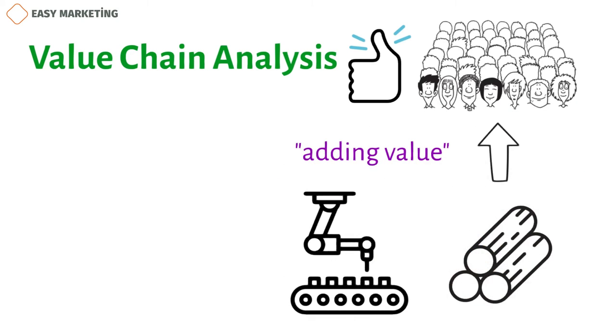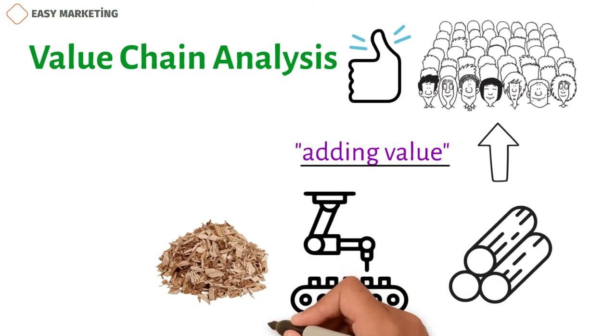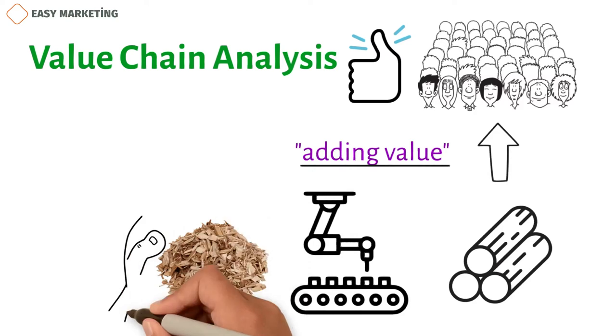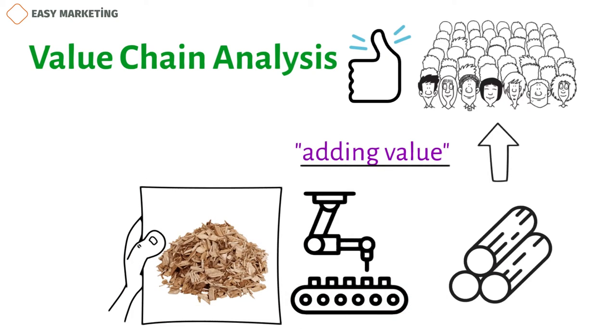This is easy to see in manufacturing, where a company adds value by taking a raw material, like wood pulp, that the end user doesn't need and turning it into something that people are willing to pay money for, like paper.